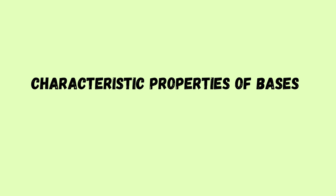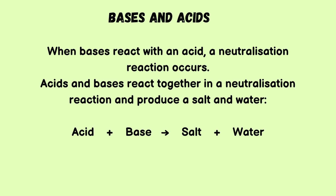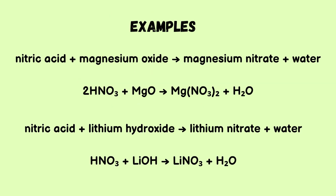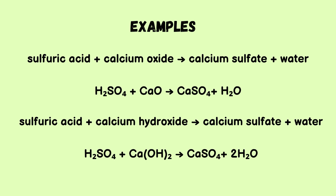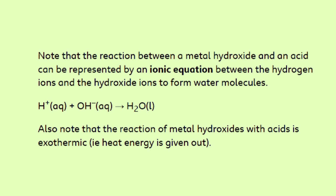Now let's see the characteristic properties of bases. The first reaction is between bases and acids — the same neutralization reaction seen earlier, producing salt and water. Examples: nitric acid plus magnesium oxide gives magnesium nitrate plus water. Sulfuric acid plus calcium oxide or calcium hydroxide gives the respective salt and water. Note that a reaction between a metal hydroxide and an acid can be represented by the ionic equation H⁺ + OH⁻ → H₂O. Also note that this reaction is exothermic — heat energy is given out.